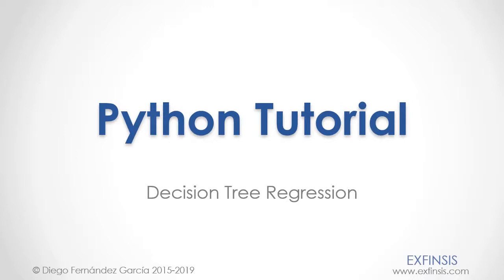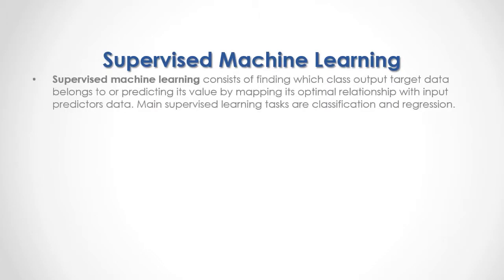Python Tutorial: Decision Tree Regression. Supervised machine learning consists of finding which class output target data belongs to, or predicting its value by mapping its optimal relationship with input predictor data. The main supervised learning tasks are classification and regression.